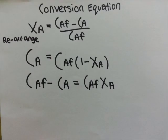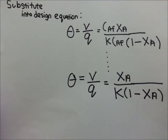In order to solve this question, we need to make use of the conversion equation. XA equals CAF minus CA over CAF. We then rearrange the conversion equation.